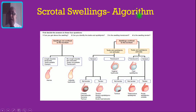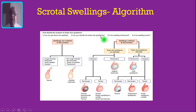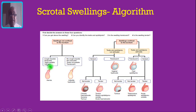Now, with the help of an algorithm, I will show you how to clinch the correct diagnosis. When you encounter a case of scrotal swelling, you have to ask four questions: Are you able to get above the swelling? Are you able to feel the testis and epididymis separately, apart from the swelling? Whether the swelling is transilluminant or not? And whether the swelling is tender or not? If you are not able to get above the swelling and the swelling has a cough impulse, is reducible, the testis is palpable and it is opaque, it is a case of hernia. Whereas if you are not able to get above the swelling, there is no cough impulse, it is not reducible, the testis is not palpable separately and it is transilluminant, then it is a case of infantile hydrocele.